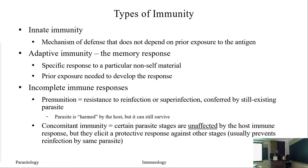The innate immune response is basically one of our lines of defense where the body recognizes a foreign invader as a non-self item and then responds. During that response, the body will build a memory response, so if it sees the invader again, the response will be much, much quicker and more potent. Adaptive immunity is that memory response — you need prior exposure to build it, and it is very specific to the non-self material. Innate immunity just recognizes something as non-self and responds, but it's a slow type of response. Adaptive immunity recognizes a specific component on that foreign invader and reacts very, very strongly.